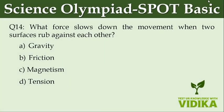What force slows down the movement when two surfaces rub against each other? Option A, gravity. Option B, friction. Option C, magnetism. Option D, tension.